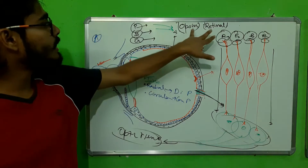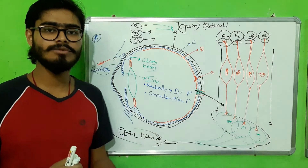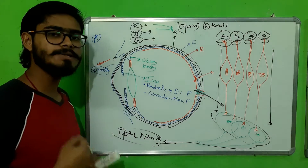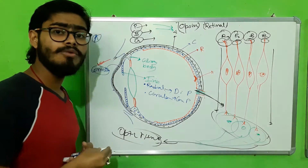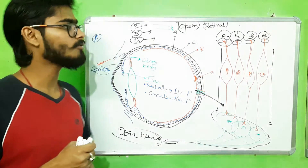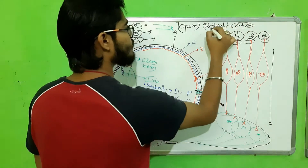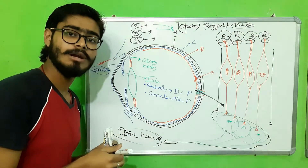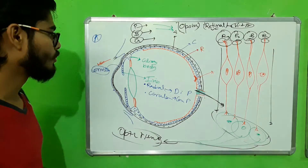The opsin and retinal eventually get rejoined — this is the regeneration of the photopigments — and the eye is again ready for photoreception. Night blindness occurs due to deficiency of vitamin A. Since retinal is a derivative of vitamin A, when vitamin A is deficient, retinal is not produced, the opsin-retinal complex cannot form, and vision is hampered — particularly in dim light.